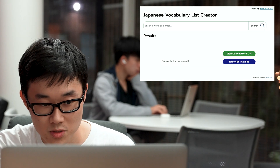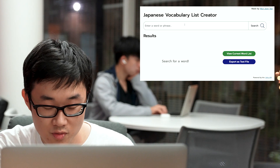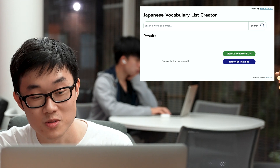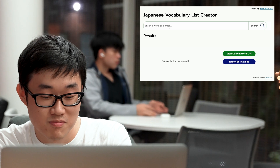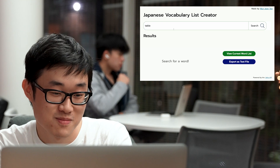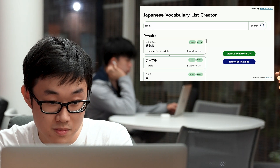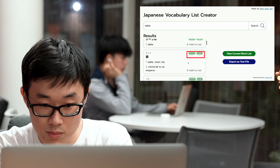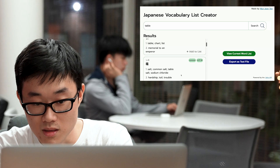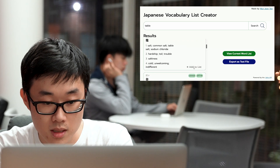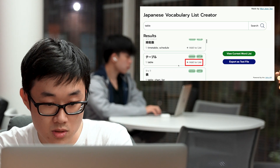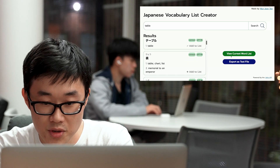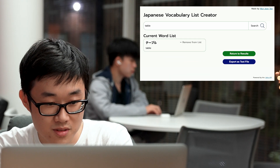So basically with my app, first you enter any word or phrase in Romanji, in English, or the kanji if you'd really like. Let's say 'table', because I'm using a table right now. All the results come up. They are labeled with their tags — if they're a common word and which level of the JLPT they are associated with. This button allows you to add it to your list, so let's add 'table' to the list. And you can view the current word list with the table here.